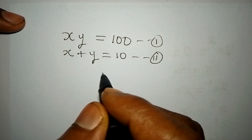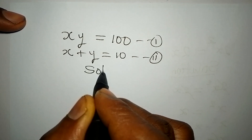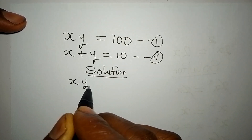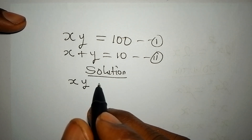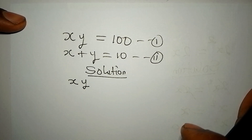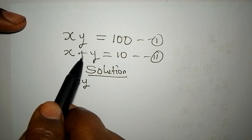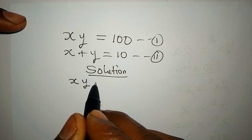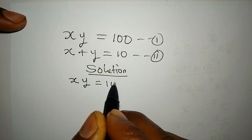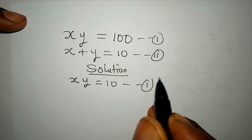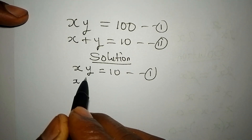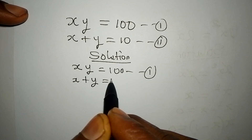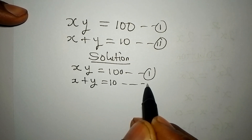Hello everyone, welcome to this problem on simultaneous equations — we can call it simultaneous linear and quadratic equations. Our first equation has xy equal to 100, and equation 2 is x plus y equals 10.